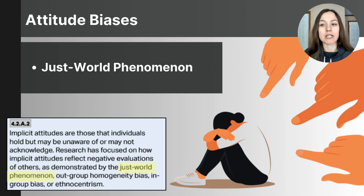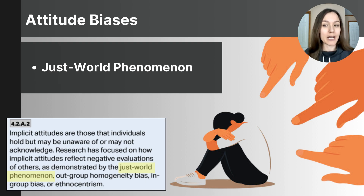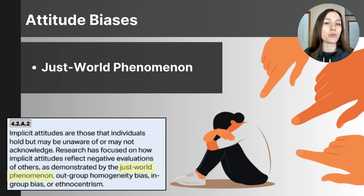As noted in the CED, several examples of implicit attitudes can influence our evaluations of others: the just world phenomenon, outgroup homogeneity bias, in-group bias, and ethnocentrism. The just world phenomenon is the belief that people get what they deserve and deserve what they get — good things happen to good people and bad things happen to bad people — reinforcing the idea that the world is fair and predictable.